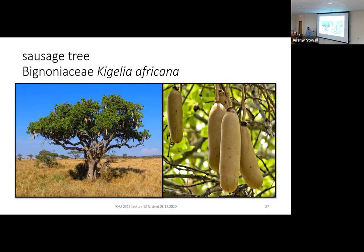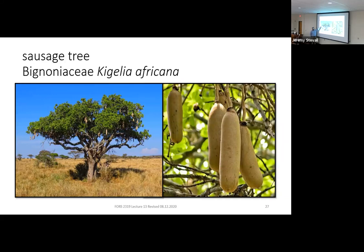Next is Sausage Tree — you can see why it's named that. The fruits look like sausages hanging in the tree. Those fruits can be two feet long and weigh 15 pounds — not small or inconspicuous at all. The tree grows in a pretty dry, open woodland setting.